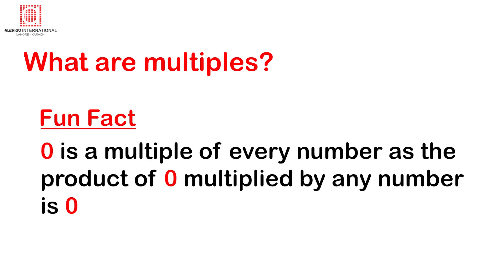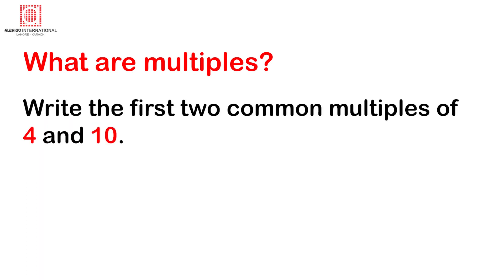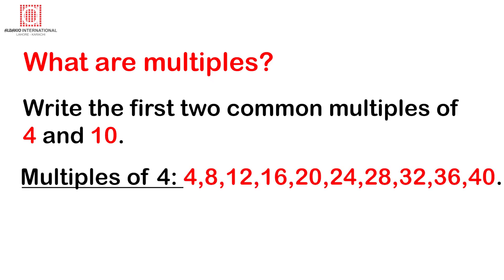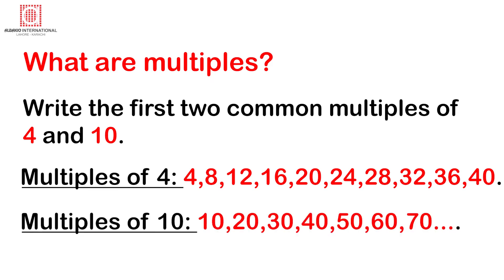Write the first 2 common multiples of 4 and 10. Multiples of 4: 4, 8, 12, 16, 20, 24, 28, 32, 36, 40. Multiples of 10: 10, 20, 30, 40, 50, 60. In both lists, 20 is common and 40 is common. So 20 and 40 are the first two common multiples of 4 and 10.